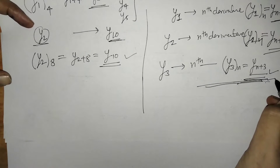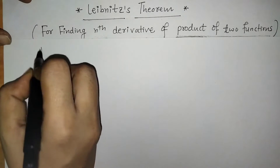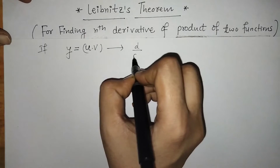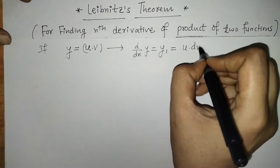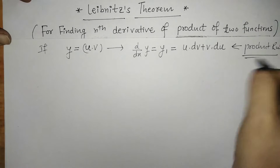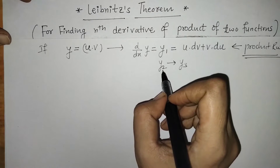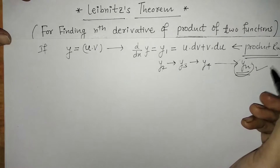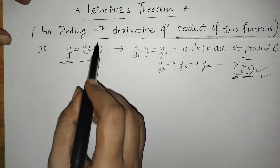So we have to remember these points to understand Leibniz theorem. This theorem is used for finding the nth derivative of the product of two functions. If y is a product of two functions, we can find its first derivative using the product rule: y1 equals first function times derivative of second, plus second function times derivative of first. In the same manner we can find y2 by differentiating y1, then y3, then y4, up to yn — this is successive differentiation. If we want the nth derivative directly, we use Leibniz theorem.